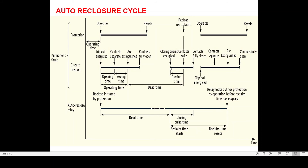Once the contact is in fully open condition, if the autoreclosure relay has a dead time of one second, then after one second — which is the dead time — it will issue a closing command to the circuit breaker. The dead time of the autoreclosure relay starts from the moment the autoreclosure relay receives the AR start signal from the distance protection relay. After the dead time lapses, a closing command is issued, the closing coil energizes, and after the closing time the circuit breaker closes. Once the arcing contacts and main contacts are both properly closed, the circuit breaker will be in the closed condition. The reclaim time then starts from the moment of this circuit breaker close.